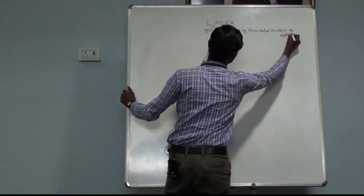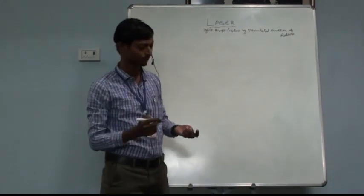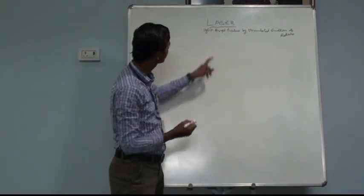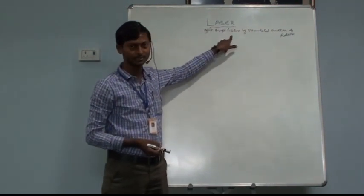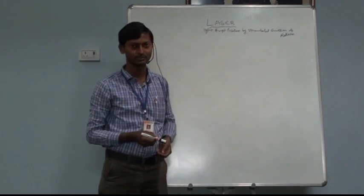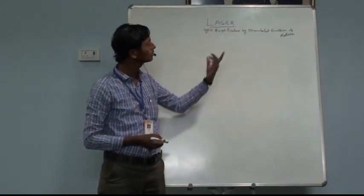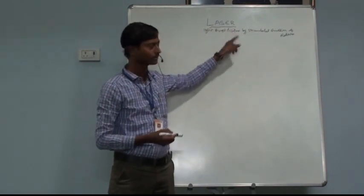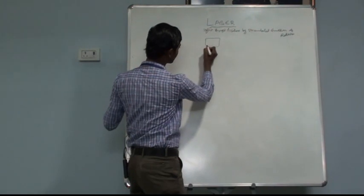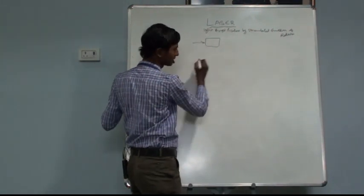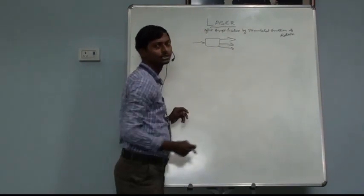Before going to discuss about the laser, let us define the terms within the word. In laser, light is amplified. Amplification means the input is less and the output is very much greater. For example, in a loudspeaker, the input is less whereas the output is very much greater — that is called a sound amplifier.